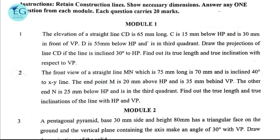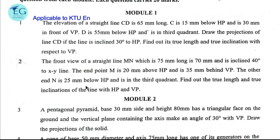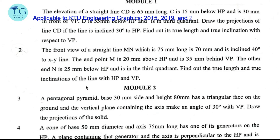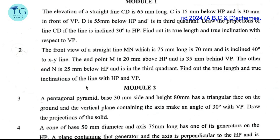The front view of a straight line MN, which is 75mm long, is 70mm and is inclined 40 degrees to the XY line. The end point M is 20mm above HP and is 35mm behind VP. The other end N is 25mm below HP and is in the third quadrant. Find the true length and true inclinations of the line with HP and VP.